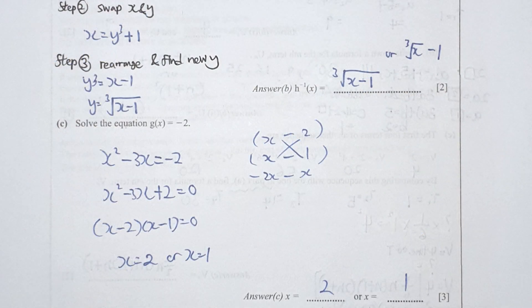So question c: solve the equation when g(x) equals to negative 2. So x squared minus 3x equals to negative 2. You should bring it over and run the factorization. You should get your x equals to 2 or x equals to 1.